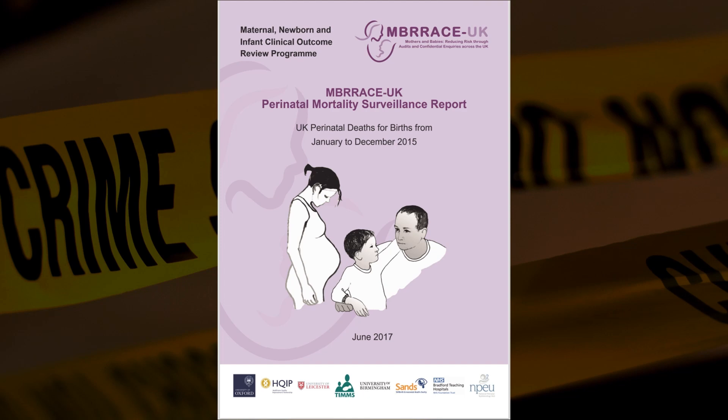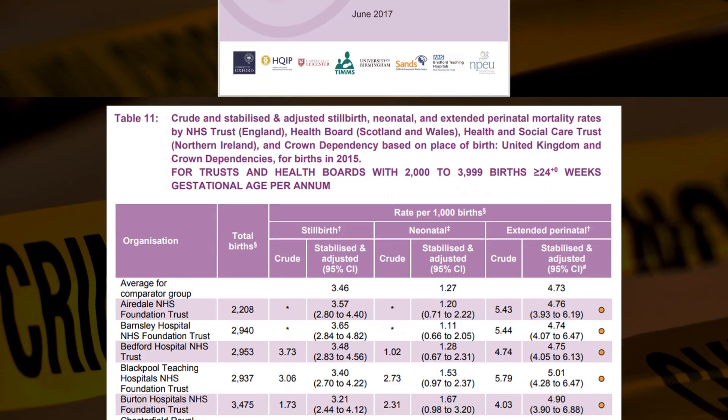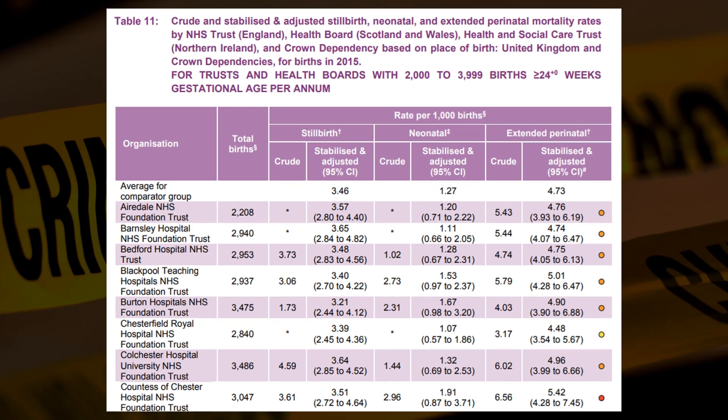Here's an extract from the 2015 report to give you a feel for the level of information available. For each hospital we get the total number of births, both crude and stabilised mortality from stillbirths and for neonatals in the care of that hospital. Crude mortality rates are entirely factual — you simply divide deaths by births to get them. The stabilised mortality rates seek to allow for the more easily available risk factors relating to each birth to give a more comparable figure across hospitals.